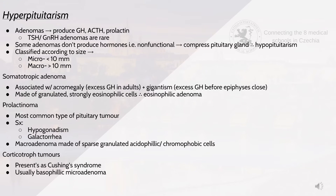Hyperpituitarism: adenomas produce GH, ACTH and prolactin; TSH and gonadotropin-releasing hormone adenomas are rare. Some adenomas are non-functional — instead they compress the pituitary gland leading to hypopituitarism. They can be classified by size: micro is less than 10mm and macro is greater than 10mm.